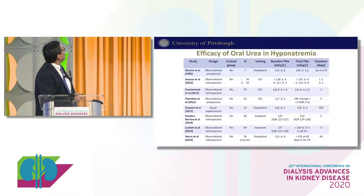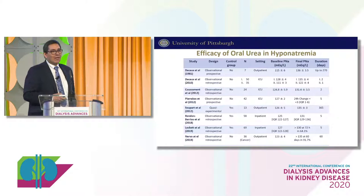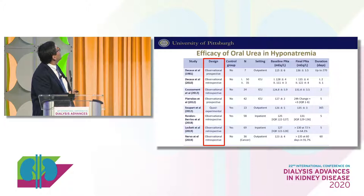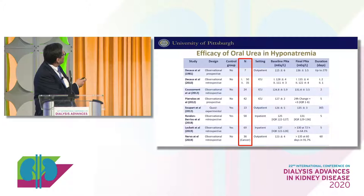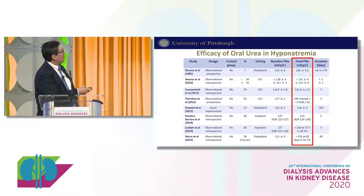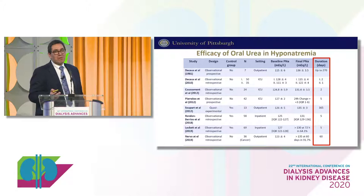What about the data supporting the use of urea in hyponatremia? There are no randomized controlled trials, but there have been many observational studies. Most are observational without control groups and have small numbers of patients. The largest study had 69 patients. They look at various outcomes: final plasma sodium, change in plasma sodium at 24 hours, and normalization of sodium. Duration of urea therapy has been very variable, from one day up to a year. Nevertheless, all of these studies show that urea is effective in treating hyponatremia.